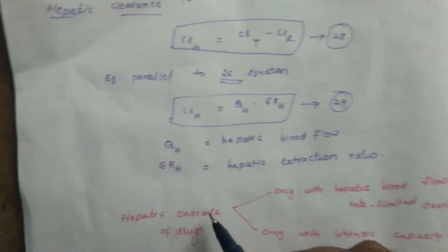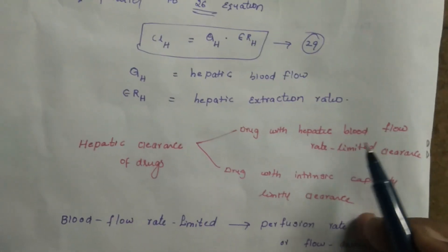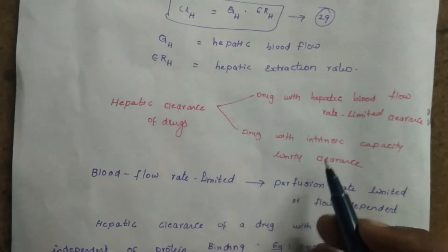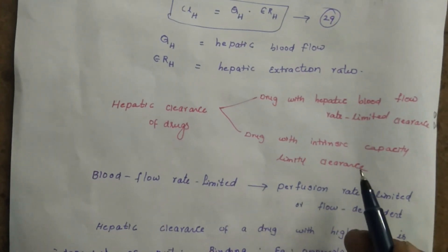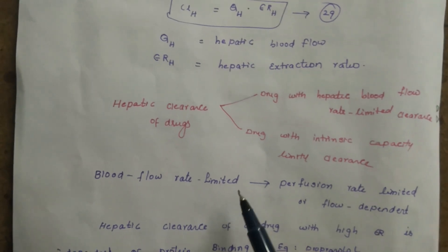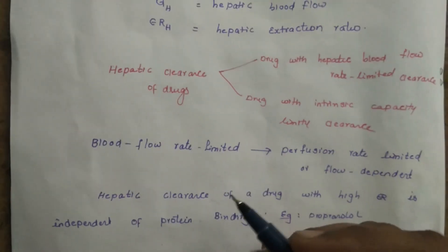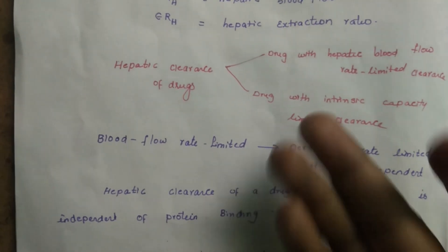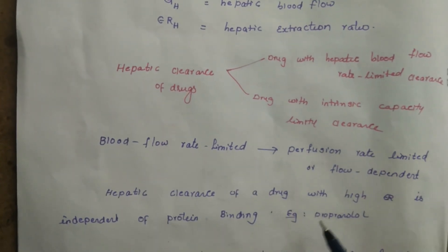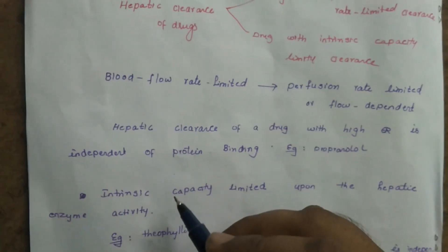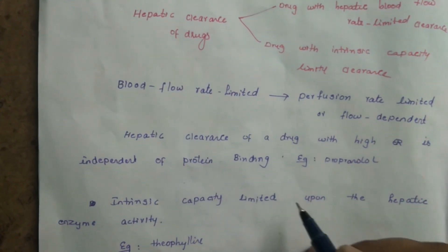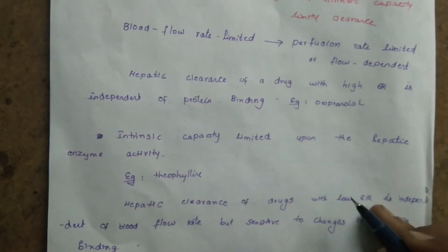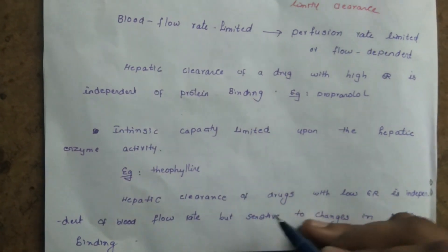Hepatic clearance of drugs falls into two types: hepatic blood flow rate-limited clearance and intrinsic capacity rate-limited clearance. For flow-limited (perfusion rate-limited) drugs with high extraction ratio, hepatic clearance is independent of protein binding and depends on blood flow — for example, propranolol, a beta blocker. For intrinsic capacity-limited drugs with low ER, clearance depends on hepatic enzyme activity — for example, theophylline — and is independent of blood flow but sensitive to changes in protein binding.